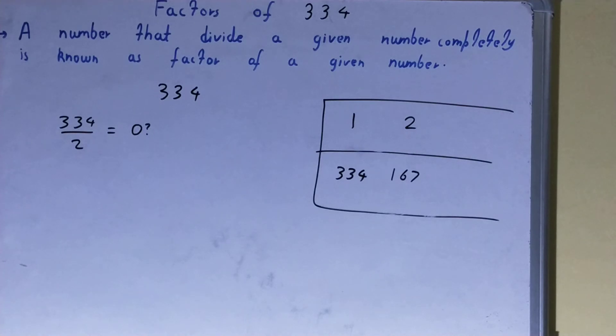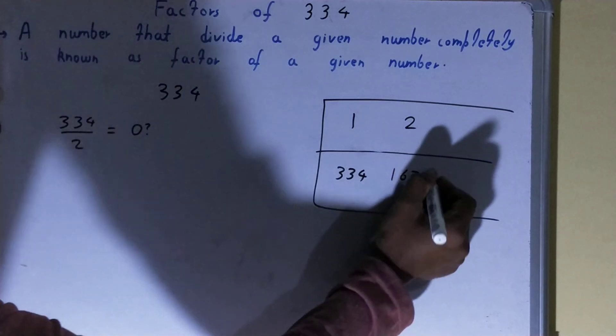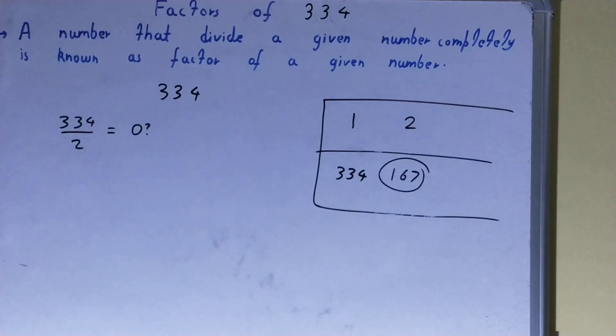Now one thing you need to see very carefully over here, that in the second row, in the last row, you have got a prime number in the form of 167. So whenever you spot a prime number in the second row, in the last row, your work is done then and there. You don't need to check any further.